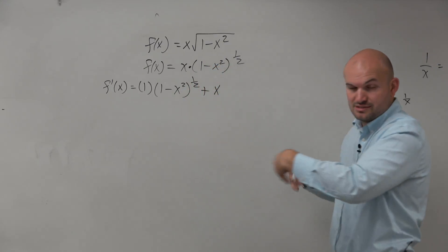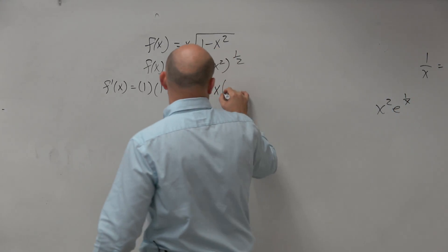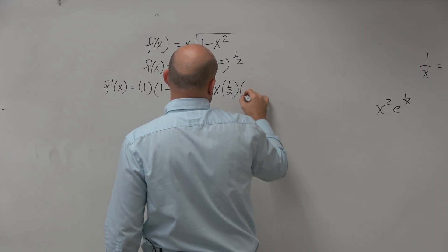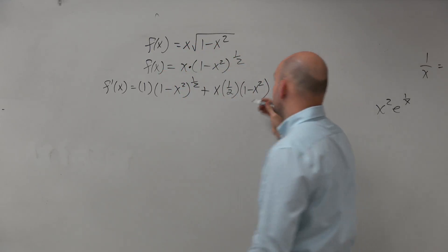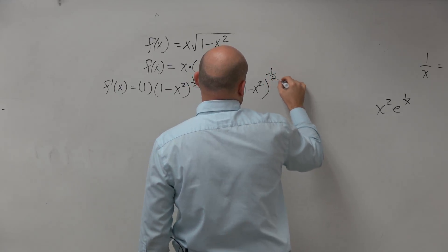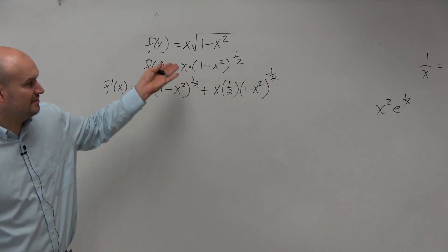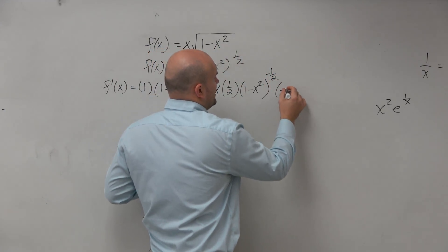Now again, this is just using the chain rule. So I bring down the 1 half, and I have 1 minus x squared, and then 1 half minus 1. Subtracting 1 is going to be a negative 1 half. And then that's times the derivative of the inside, which is a negative 2x.